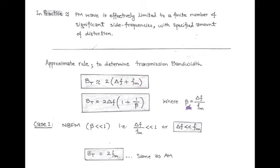And we know that modulation index β is equal to ΔF upon FM. So in place of FM/ΔF, we can write 1/β.